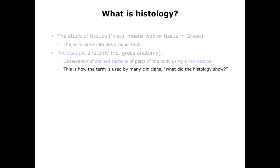This is how the term histology is commonly used by clinicians. A family practice doctor, for instance, may remove a skin growth from a patient's arm and send it for analysis by a pathologist. She might call later and ask, what did the histology show? The pathologist will have prepared and stained sections from the sample and examined them with a microscope. Given years of experience, the pathologist will be able to classify the appearance of the sample as either normal or showing signs of some pathology. The histology is what the pathologist sees. The diagnosis of normal or abnormal is an interpretation of the histology.